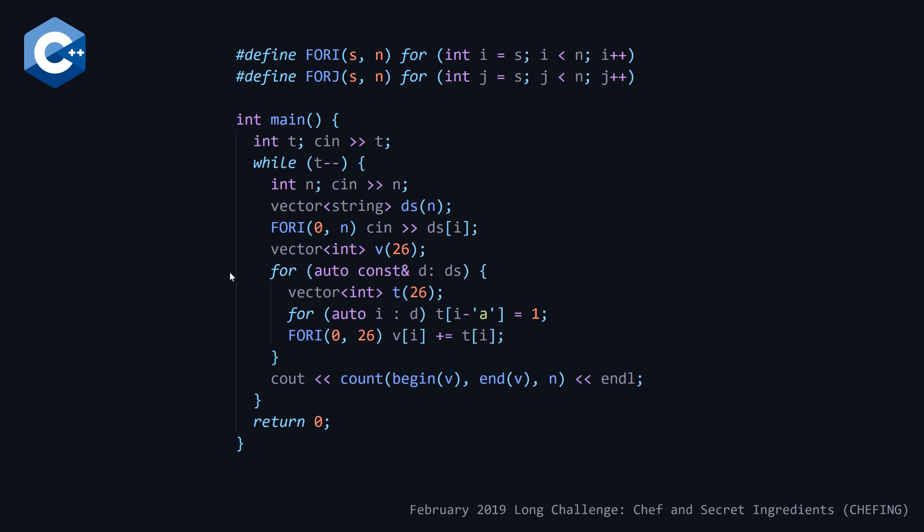We declare our vector of integers which keeps track of the count of our ingredients across all our dishes. Then for each dish in our dishes, we have a range-based for loop. Note that I'm pretty sure without this const reference, we'd be doing a copy, which could lead this solution to timing out. So my guess is you need this.